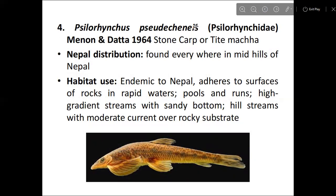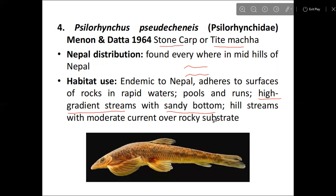Next is Siluringus pseudecnis, also known as stone carp. According to Menon and Datta 1964, this species is endemic to Nepal and adheres to the surface of rocks in rapid waters and running streams. It is generally found in high-gradient streams where the water is fast-flowing, requiring sandy bottom in hill streams with moderate to high current.